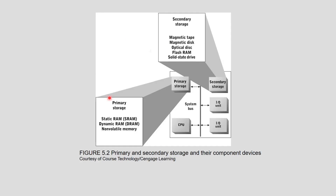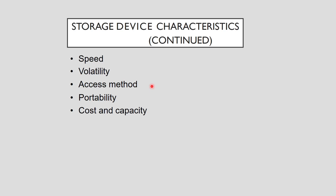A typical computer system has many storage devices. Storage devices and technologies vary in several important characteristics, which include speed, volatility, access method, portability, and cost. No single device or technology is optimal in all characteristics, so any storage device optimizes some characteristics at the expense of others.